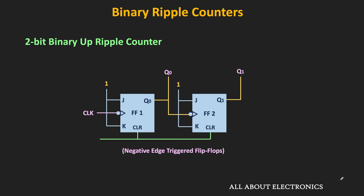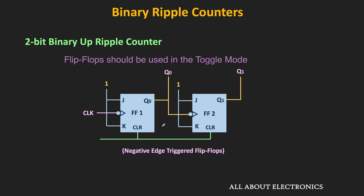If we have more than two flip-flops, the flip-flop which receives the clock signal last represents the MSB. For up counting, the Q output of the flip-flop is connected to the clock input of the next flip-flop. The next flip-flop will receive the clock whenever there is a transition in the output of the first flip-flop. To get those transitions, we need to use the flip-flops in the toggle mode, so that at every clock pulse the output toggles, allowing the next flip-flop to receive the clock signal.